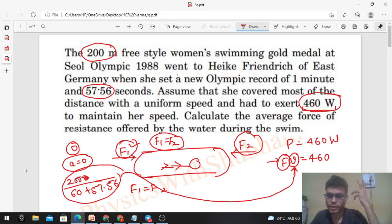Once you substitute the value of v, you will get the value of F as 460 divided by v. V is 200 divided by (60 plus 57.56).